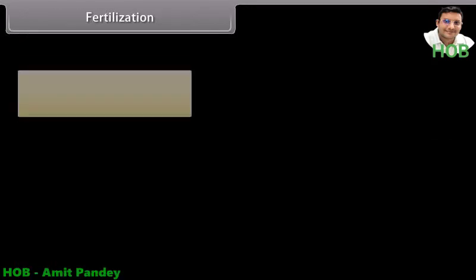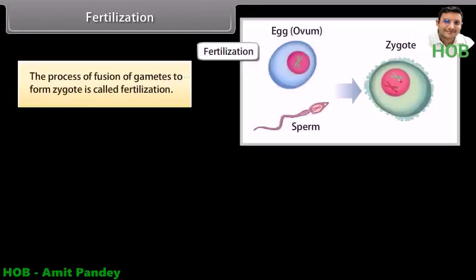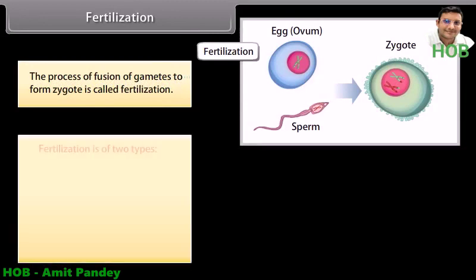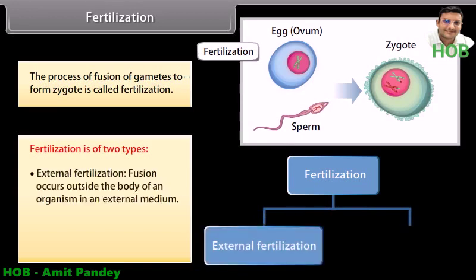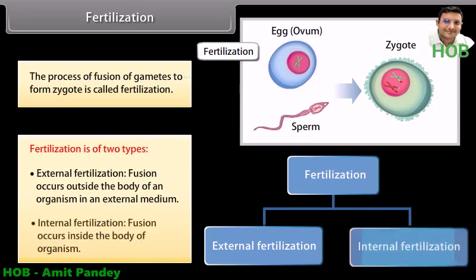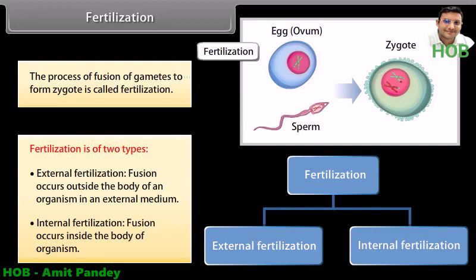Fertilization. The process of fusion of gametes to form a zygote is called fertilization. Fertilization is of two types: external fertilization, where fusion occurs outside the body of an organism in an external medium, and internal fertilization, where fusion occurs inside the body of the organism.